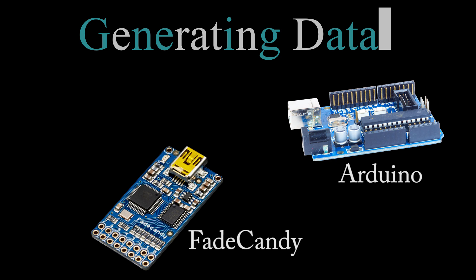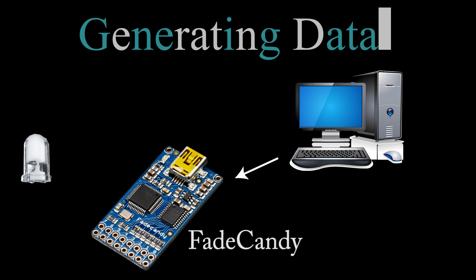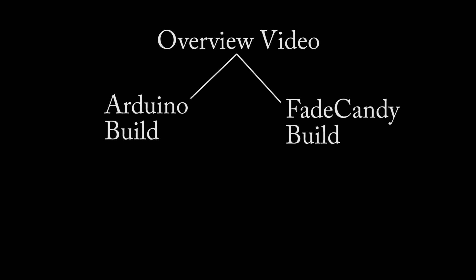I started my addressable LED project with an Arduino, but I ended up using the fade candy because I wanted real-time control on my LEDs in order to do light beat matching, weather notifications, and in general have more flexibility. This is the first fork in the road for my build series. After this overview video, you can choose either the project with the Arduino or with the fade candy.